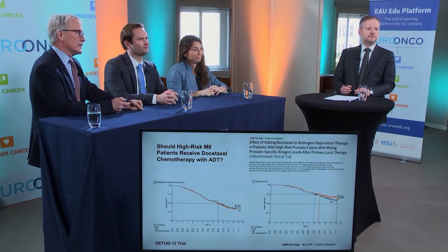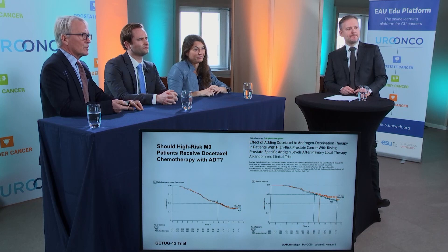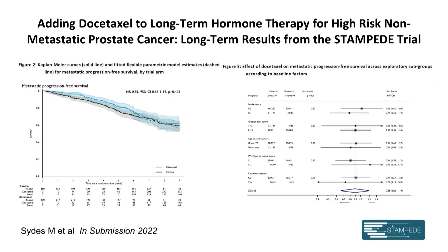Should high-risk patients receive docetaxel chemotherapy? The GETUG-12 trial, published in JAMA Oncology in May 2019, shows that at 12 years for radiological progression-free survival and overall survival, there's really not much difference — docetaxel is not effective in that group. This is consolidated by the M0 data from Stampede: at six and a half years, the hazard ratio is virtually identical. We can say with confidence that in the M0 setting, whether node positive or negative, docetaxel is not an effective drug.